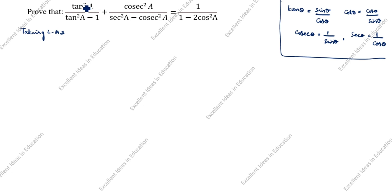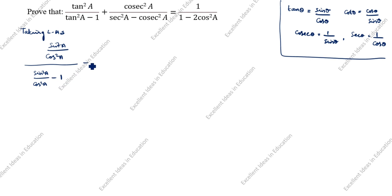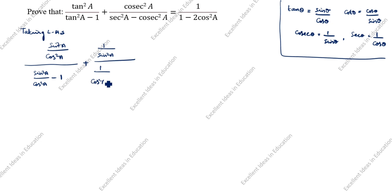Tan²a — how will we split it? Sin²a divided by cos²a. So the first term becomes: (sin²a / cos²a) divided by (sin²a / cos²a minus 1), plus cosec²a which splits as 1 by sin²a, divided by (sec²a minus cosec²a), which is (1/cos²a minus 1/sin²a).